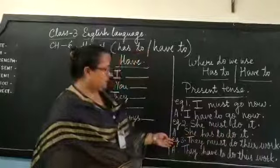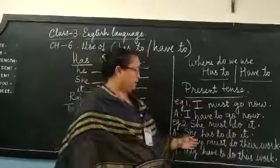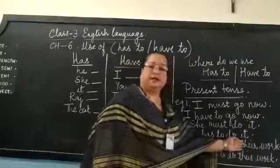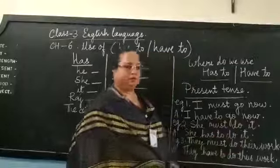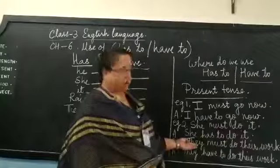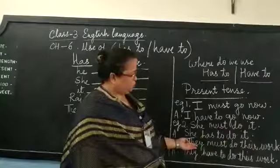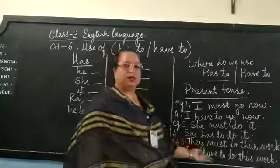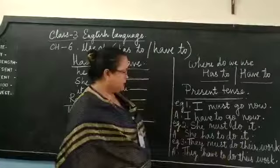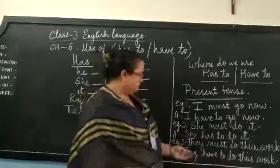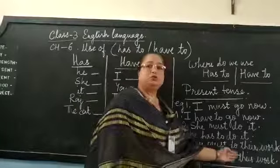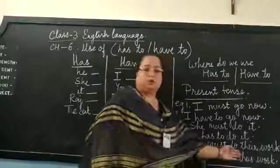Now let us look at the third example: They must do their work. The sentence begins with they, so we will be using have to. The new answer is: They have to do their work.